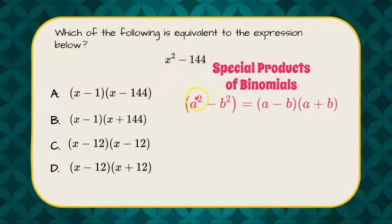We know that x² is a perfect square and 144 is also a perfect square. So the square root of the first is a and the square root of the second is b.